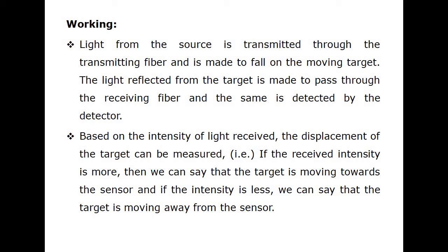When the object is near the sensor, the light intensity is high, so the receiver detector receives high intensity — meaning the target is nearby. Based on whether the intensity level is reduced or increased, and the calculation, we measure the output of the sensor and determine how much distance the object has traveled.